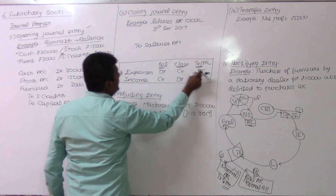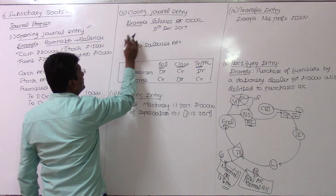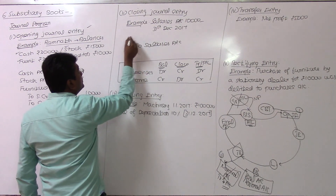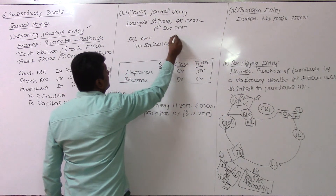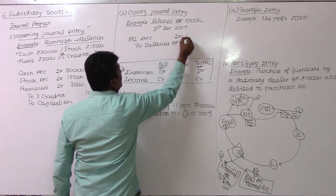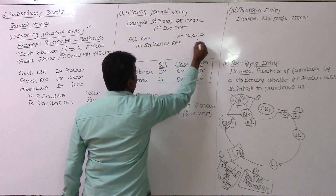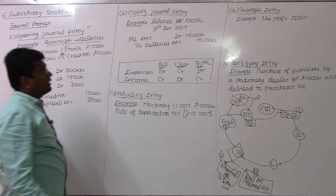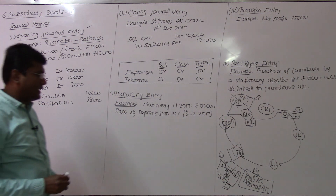I have to debit the trading and P&L account. So, I debit the Profit and Loss account for a value of 10,000. This is the closing journal entry. It will not be in any subsidiary books. This is what about the second set.